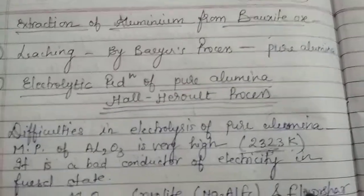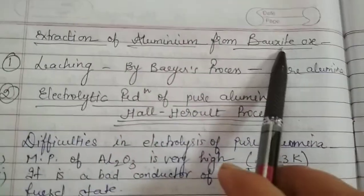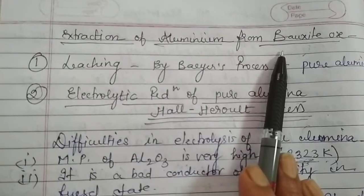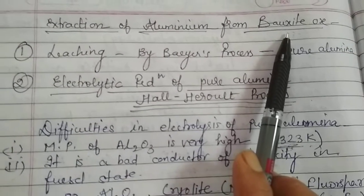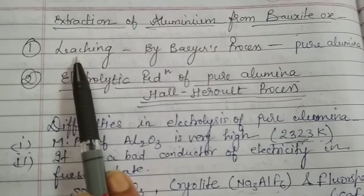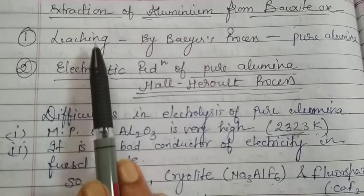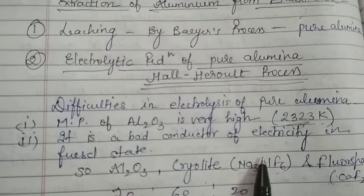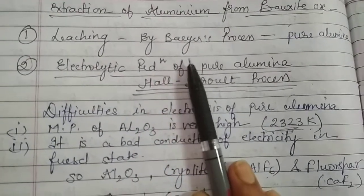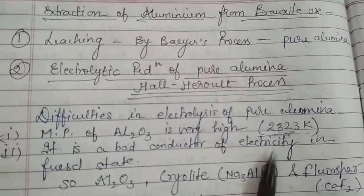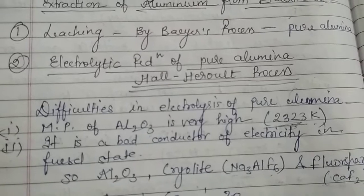Now let's see the second application of electrolysis: the extraction of aluminium. Let's see the extraction of aluminium from bauxite ore — Al₂O₃ — which is the most common ore. The first process we go through is leaching by which impurities such as iron, titanium oxide, iron oxide, and silicon dioxide can be removed, giving us pure aluminium by Bayer's process, which we have already discussed in the concentration methods.